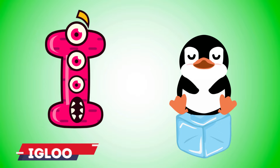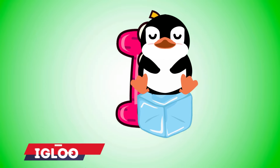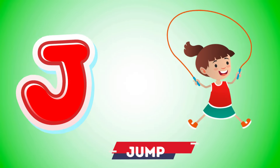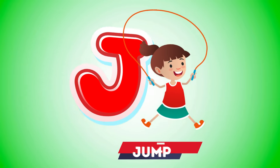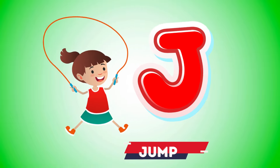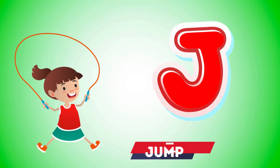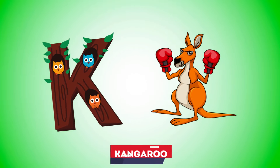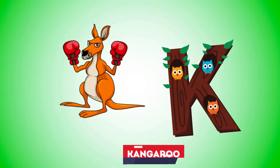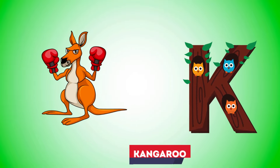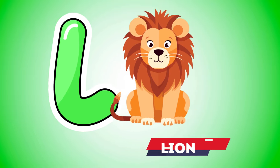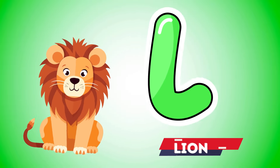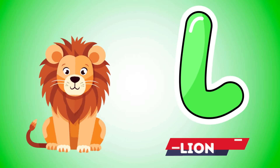I is for igloo, i-i-igloo. J is for jump, j-j-jump. K is for kangaroo, k-k-kangaroo. L is for lion, l-l-lion.